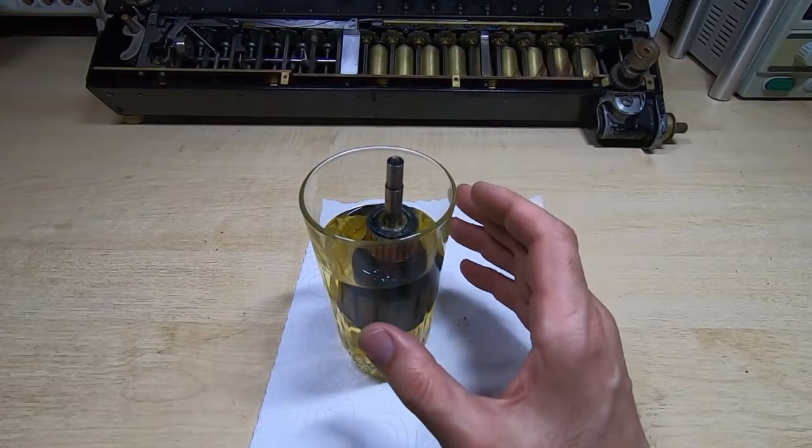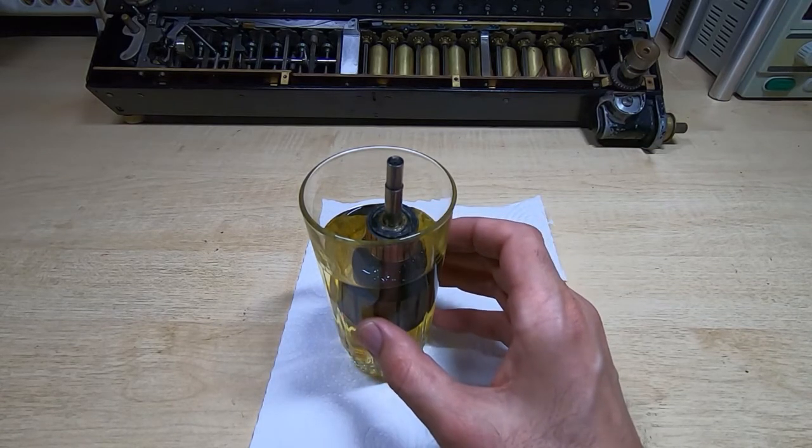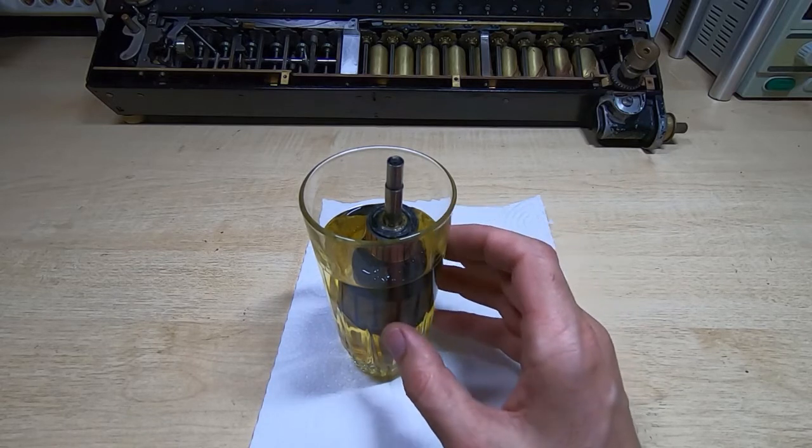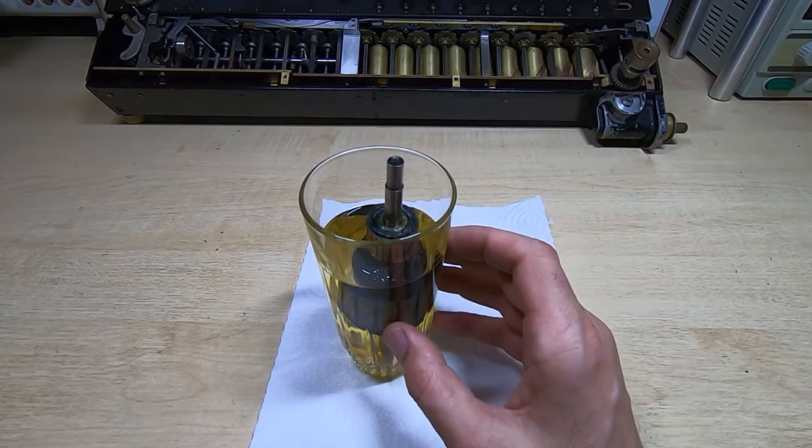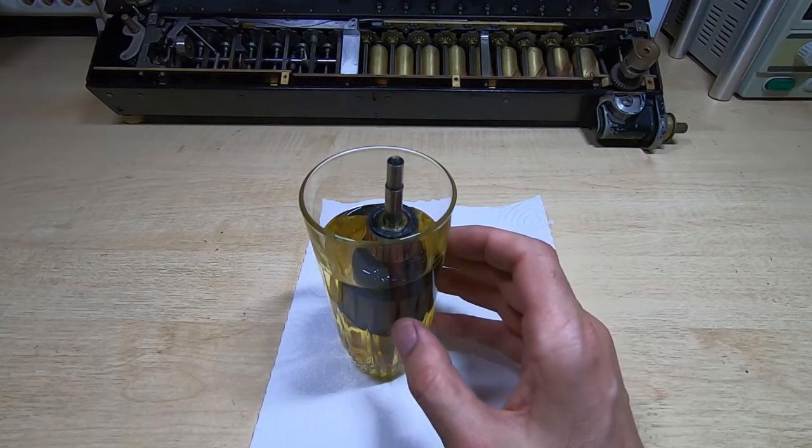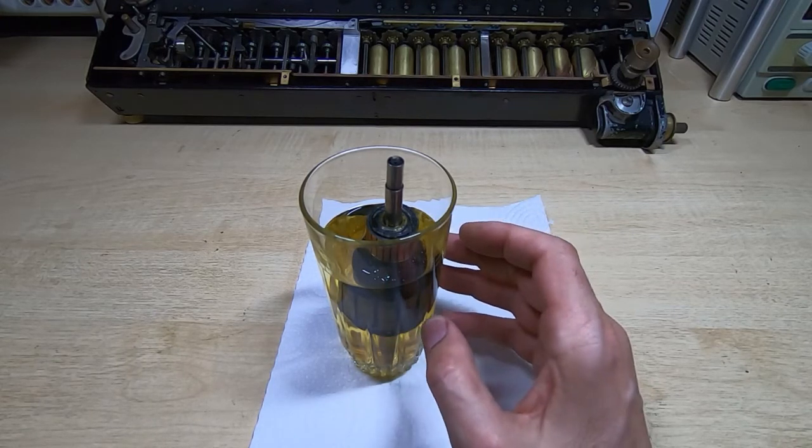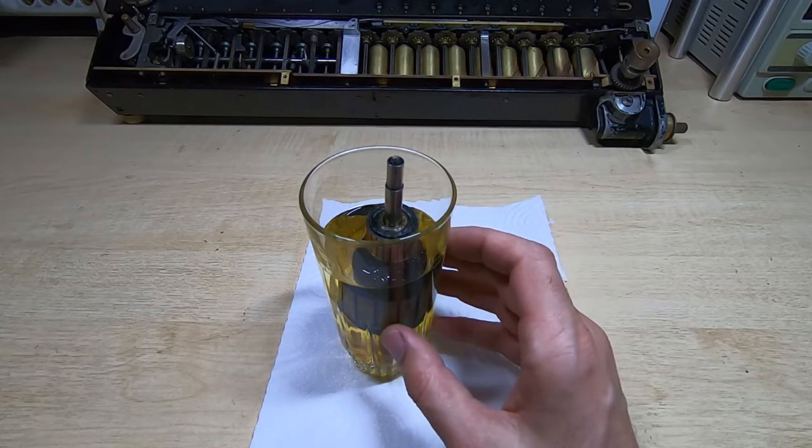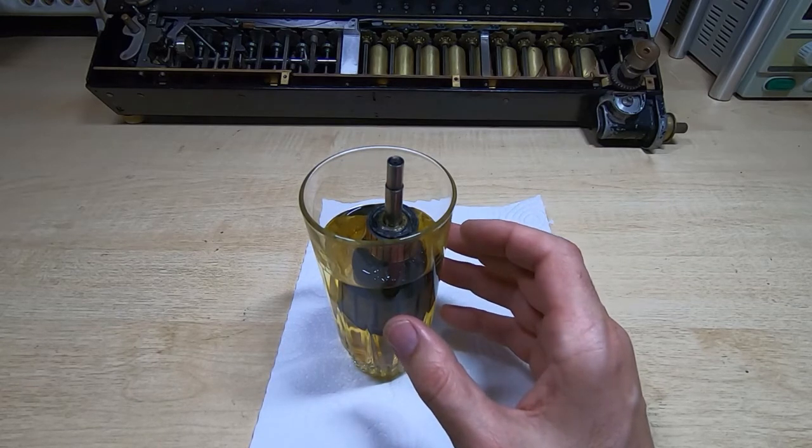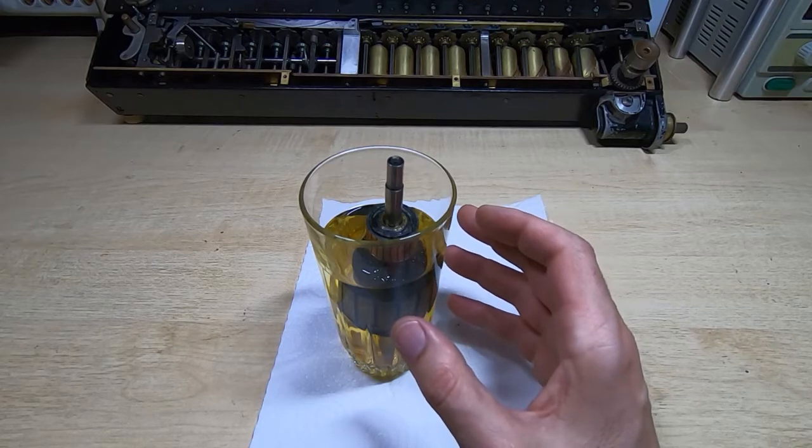I don't really know what this black material is. I assumed at first it was just tar, which I come across quite a bit in vintage electronics, and normally you can dissolve it fairly easily. This material has resisted most solvents I've thrown at it so far, and I didn't want to put anything too aggressive on because up until now I didn't want to completely remove it. But now I want to remove it, so step one is I'm going to soak it in acetone. This may take several days.